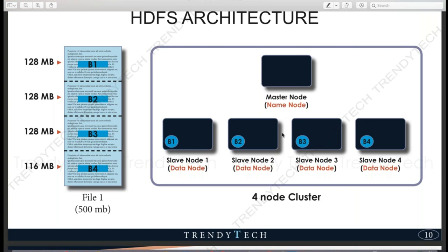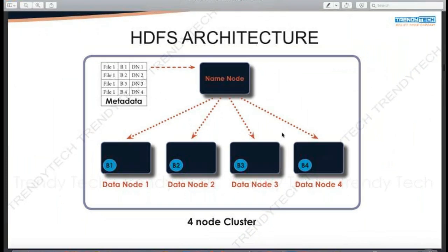This diagram demonstrates the architecture clearly. The NameNode holds namespace information — for example, file one has block one stored on DataNode 1, block two on DataNode 2, block three on DataNode 3, and block four on DataNode 4. This table is kept in memory of the NameNode so it can retrieve information very quickly, because disk access time is slower.